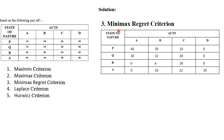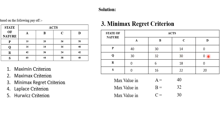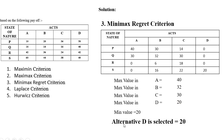Now we solve the minimax part. We divide into two parts: maximum and minimum. First find the maximum regret value for each action: in A it is 40, in B it is 32, in C it is 30, in D it is 20. Now find the minimum among these maximum values — the minimum is 20, which appears in alternative D. Therefore alternative D is selected, with a value of 20. This is our minimax regret criterion.